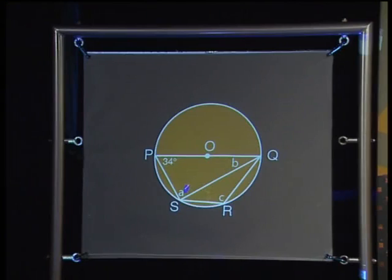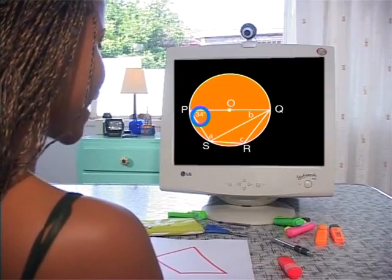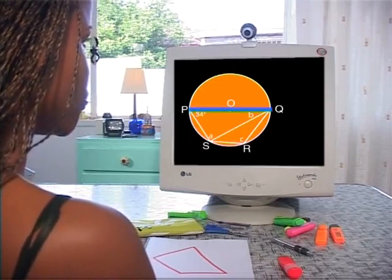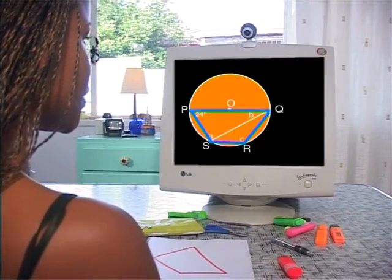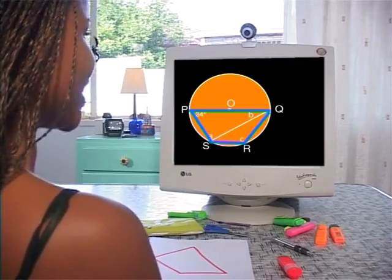Now that we know the theorem about the opposite angles of a cyclic quad, let's look at a problem involving calculating the sizes of angles. I want you to calculate the size of A, B, and C. Have a good look at the diagram and add the information you have available to you. We know the size of angle P is 34 degrees and POQ is the diameter of the circle. PQRS is a cyclic quad that contains two triangles, PQS and QRS.